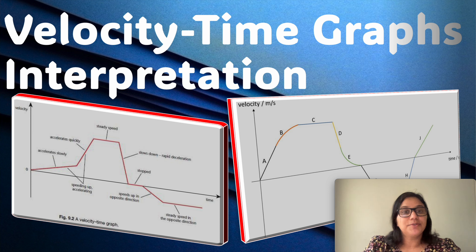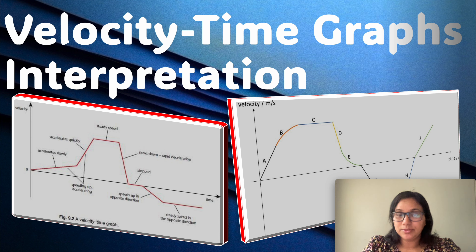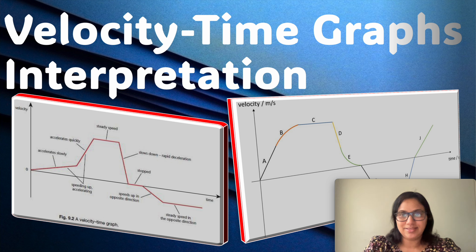A velocity-time graph shows how velocity changes over time. Velocity is a dependent quantity plotted on the y-axis, and time is the independent variable taken on the x-axis.